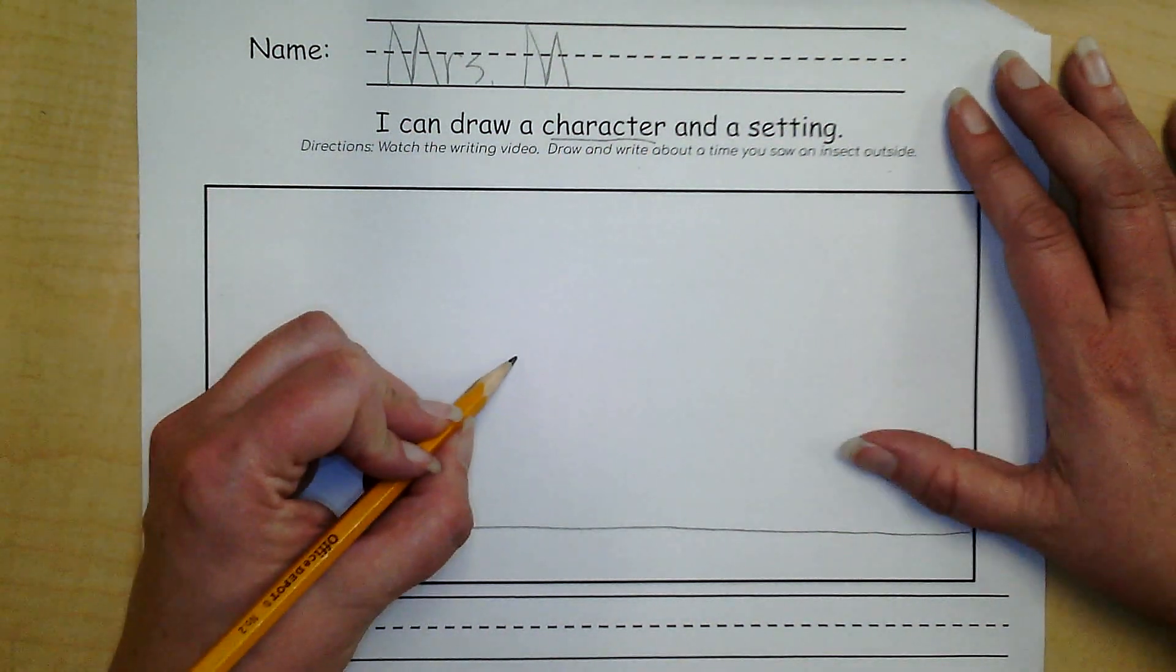Well, gosh, what else would be outside with me? There was grass. You know what you would see when you're outside? You would see the sun in the sky. So I better draw the sun. And let's see, what else was with me outside? Oh, my mom was there with me. So I better draw my mom.